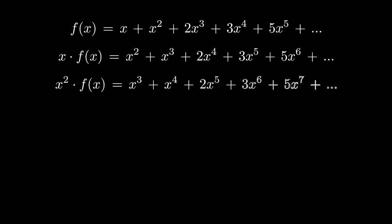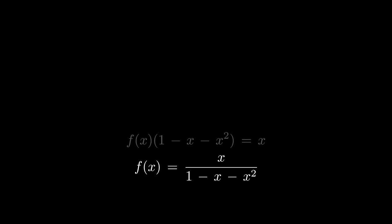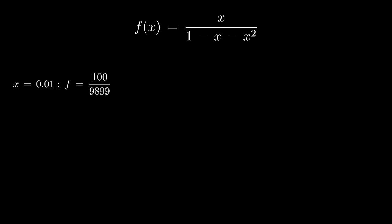To get the explicit expression for the generating function f, multiply by x and multiply by x squared. So we get a shift and a double shift. When you subtract the shifted polynomials from the original one, only x survives. So this is what f really is. Let us now try 0.01 for x. We get our fraction.